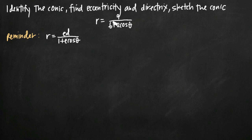Today we're going to be talking about how to use the equation of the conic section in polar coordinates to identify the conic, find its eccentricity and the equation of its directrix, and then sketch the conic. In this particular problem, we've been given the polar equation r equals 9 divided by 6 plus 2 times cosine theta.